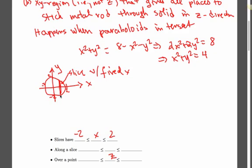Now, along a slice, the smallest y value is there, and the largest y value is there. So now, what is this? The circle is x squared plus y squared equals 4.